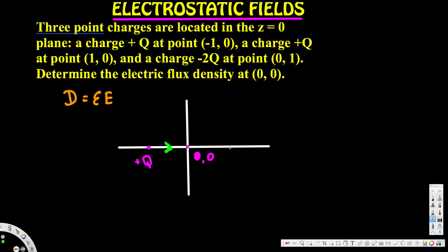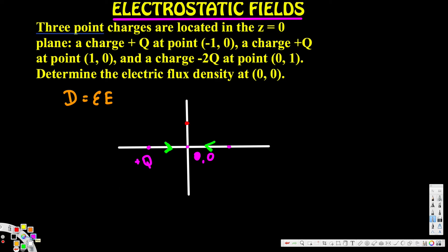We also have another plus q charge at (1, 0), placed somewhere here on the positive x-axis. And another charge, negative two q, located at (0, 1) — so at position one on the y-axis. So we have: plus q, plus q, and negative two q.